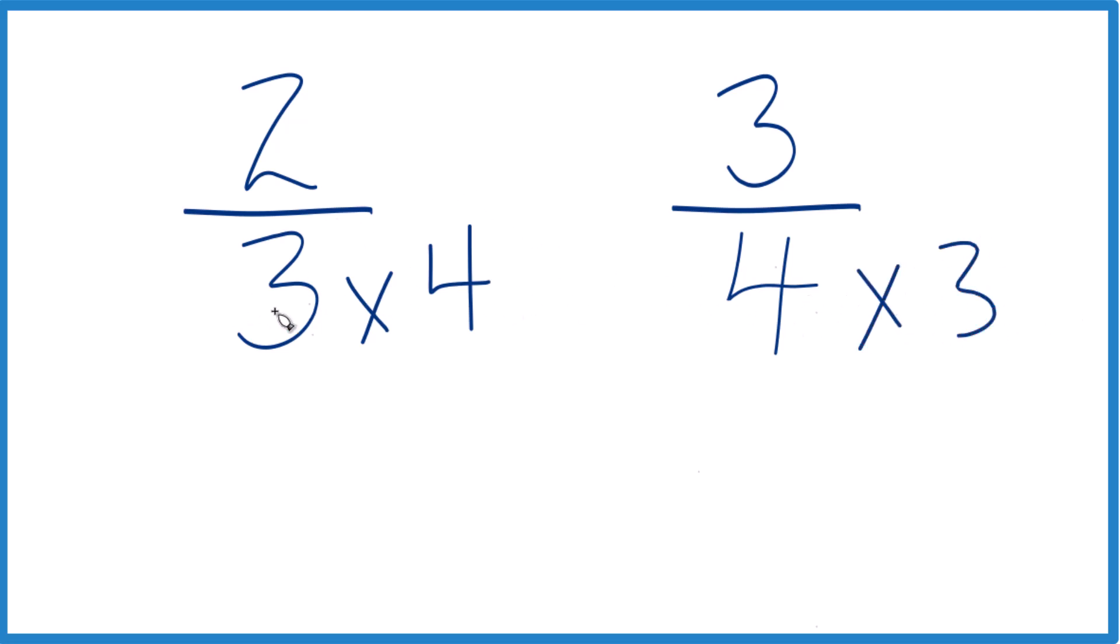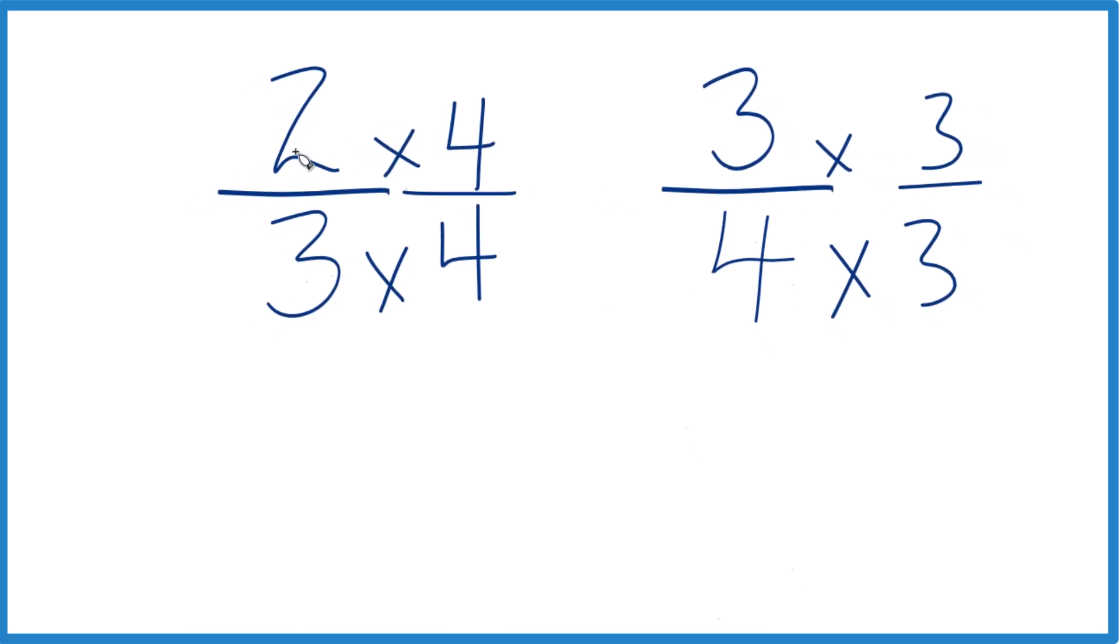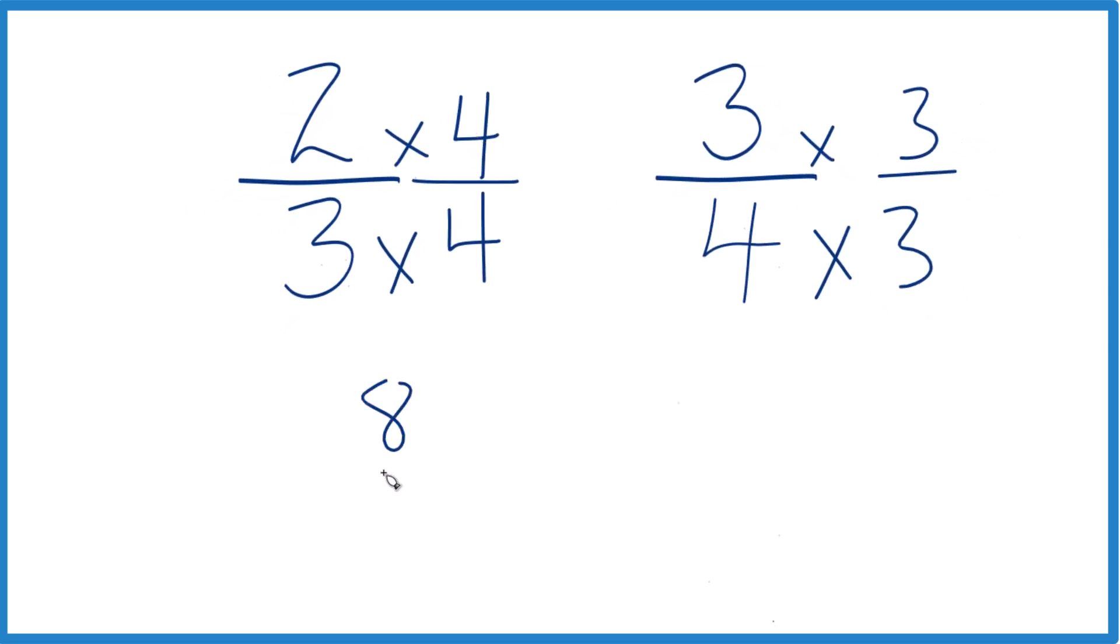But we can't just multiply the denominator, we need to multiply the top here, the numerator as well. Four over four is one, so we're just multiplying by one. But now we have two times four, we have eight, over three times four is 12. Over here three times three is nine, four times three, that's 12.